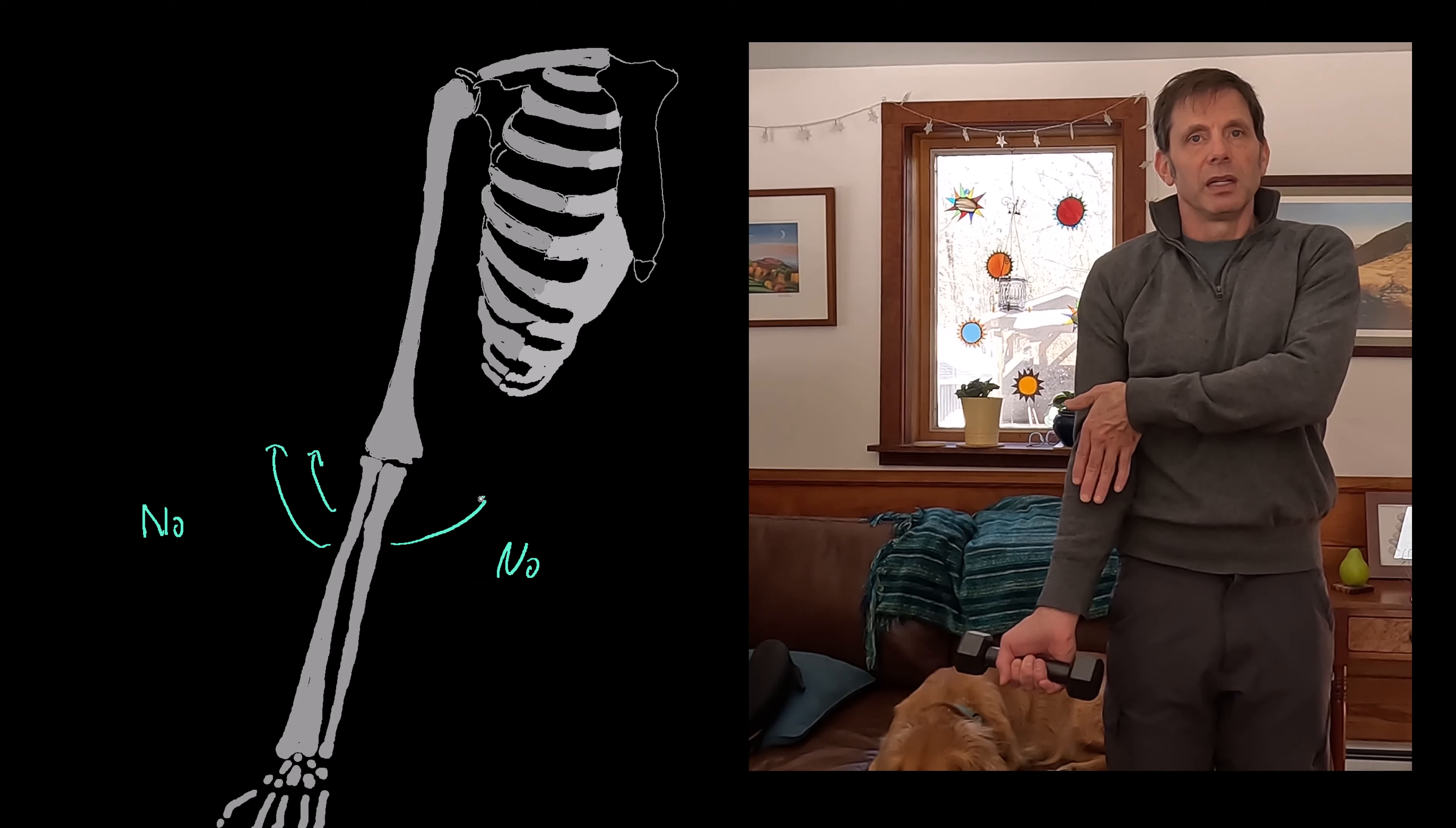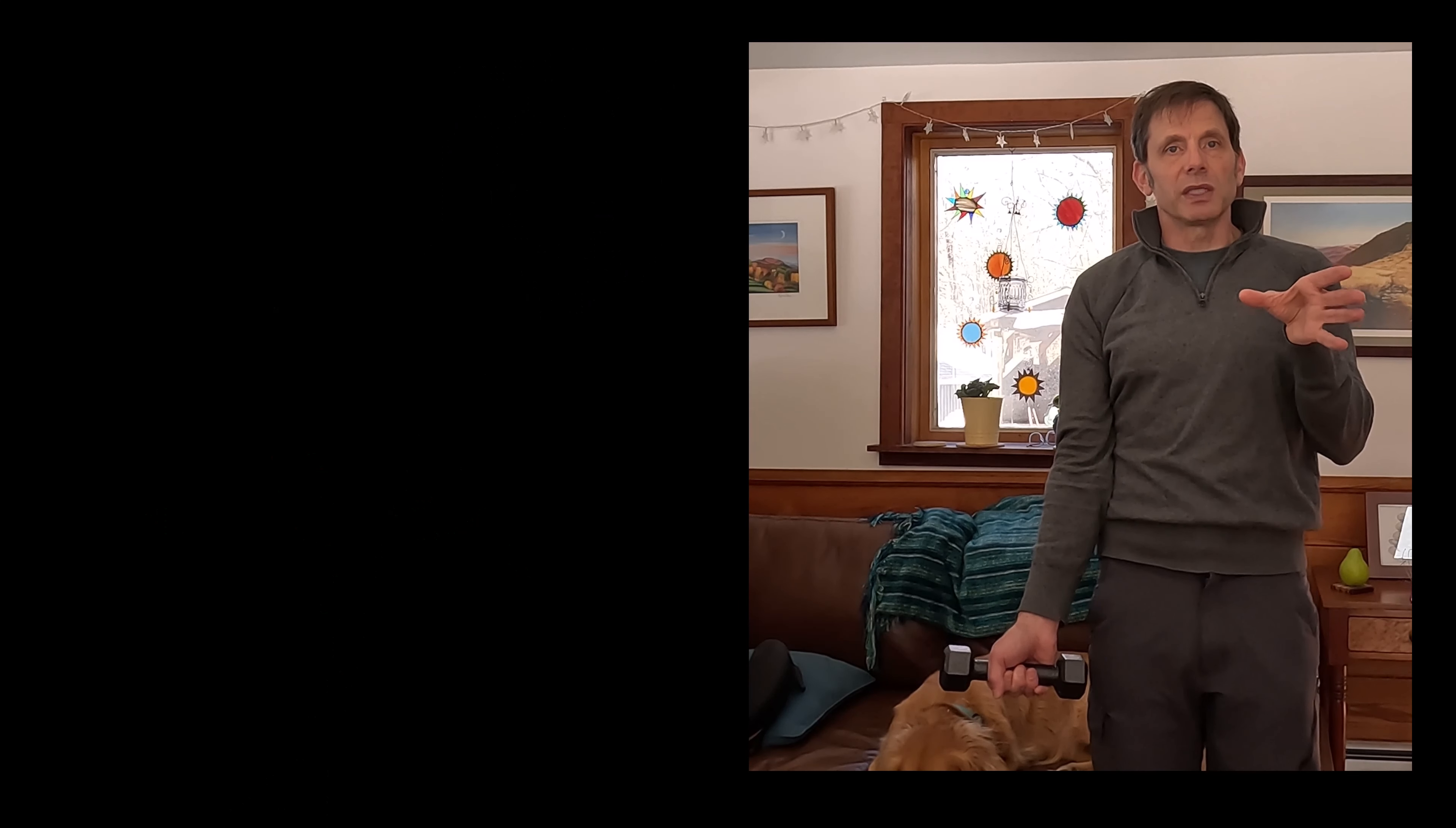Muscles move bones at joints. A joint is a place where bones meet. If we look at the elbow, there are actually three bones that meet. We can talk about this as a single joint for simplicity.